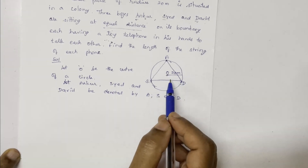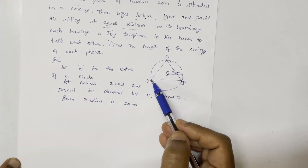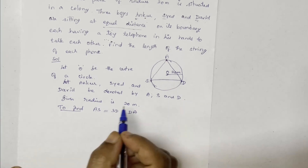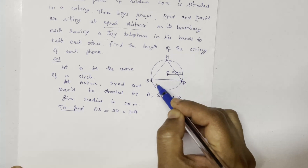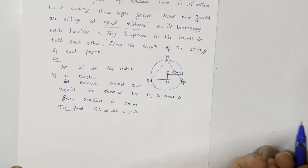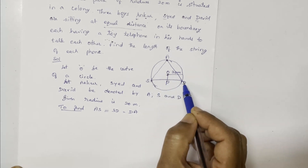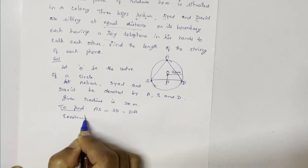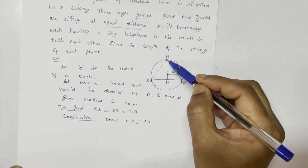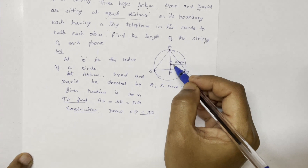The given radius is 20 meters. We have to find the string length. Let radius OA equal 20 meters. Draw a perpendicular line from O to SD. Mark the perpendicular foot, making SP equal to PD. OP is perpendicular to SD. Join OA. OA is the radius with length 20 meters.